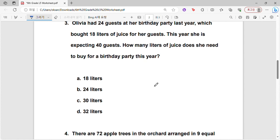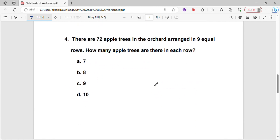Let's skip this one, let's go to this one. This one is actually very simple. It's asking: there are 72 apple trees in the orchard arranged in nine equal rows, how many apple trees are there in each row? Again, this is pretty simple. It's saying if the 72 apple trees are distributed equally into nine rows, how many apple trees will there be in each of those rows?